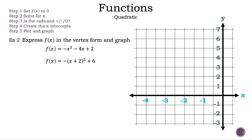The steps for finding x-intercepts are: Step 1, set f of x to 0. Step 2, solve for x. Step 3, is the radicand positive, negative, or 0? Step 4, create the x-intercepts. Step 5, plot and graph. This time we're going to plot the vertex first. The vertex is the point negative 2, 6. We have a maximum because a is negative, so the graph goes down, which means our graph will cross the x-axis and we will have two real solutions.